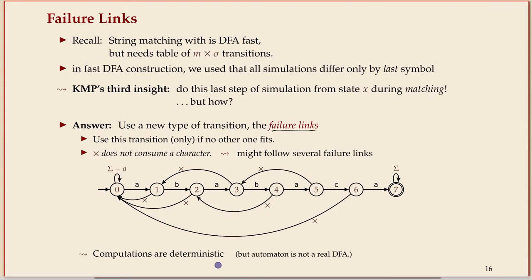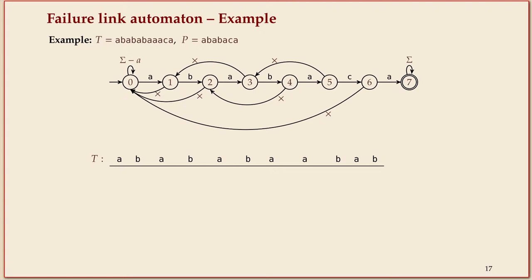This has the benefit that every state needs just a single error edge — a failure link. The computation is still deterministic: you have exactly one choice. This is different from NFA epsilon transitions — here, you either take the matching edge or the failure link; there's never any ambiguity. For the ABABACA example, here's the failure link version. Walking through: start in state zero, read A — can do that, go to state one; read B — go to state two; read A — go to three; read B — go to four; read A — go to five.